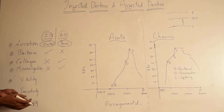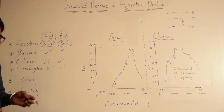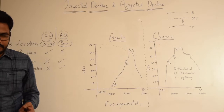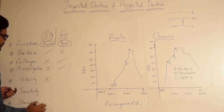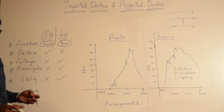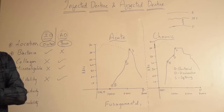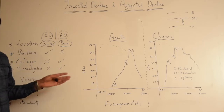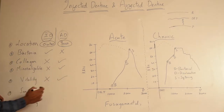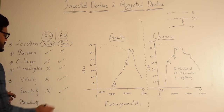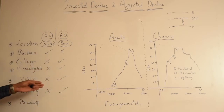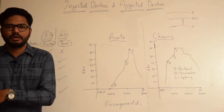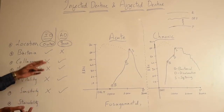Coming to vitality: as infected dentin has numerous bacteria, it is basically a carious necrotic tissue and is considered to be dead, whereas affected dentin has tubules, odontoblastic processes, and there can even be a response to stimuli, so it is considered to be vital. You can see no response or sensitivity in case of infected dentin, whereas there can be response to various stimuli — osmotic, mechanical, or thermal stimuli — in case of affected dentin.